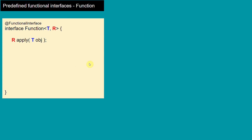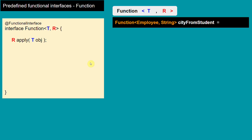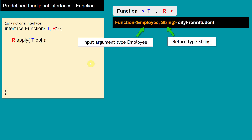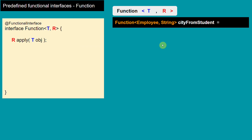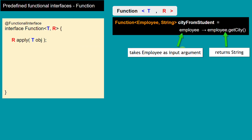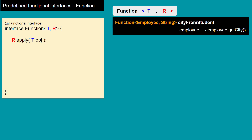If you want to create a lambda for the Function functional interface, we write it like this. Here we have a function which takes Employee as an input argument and returns String. The lambda implementation takes an Employee as input and returns the city of the employee as a String, so that's why it is a valid Function implementation.